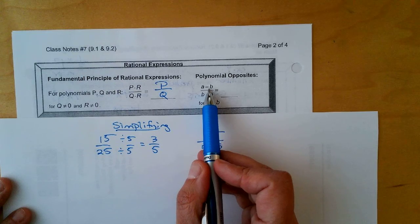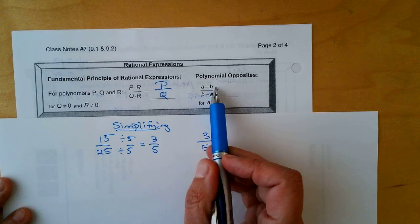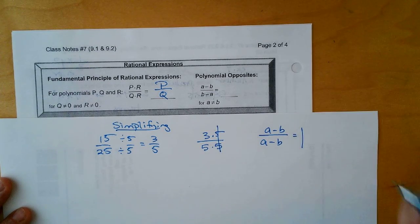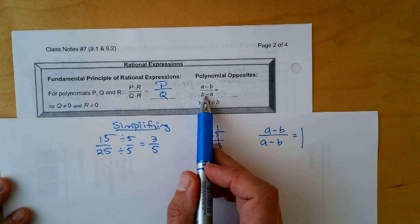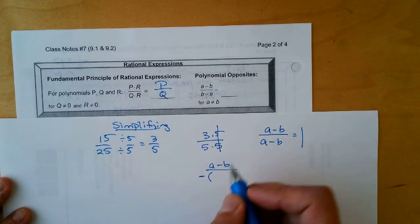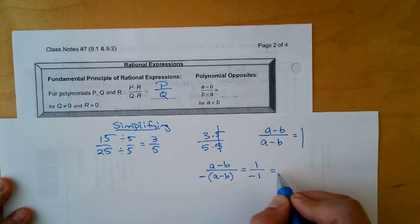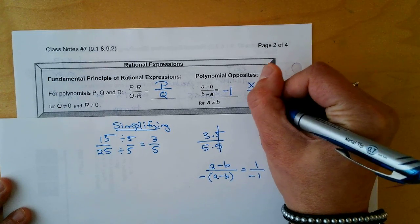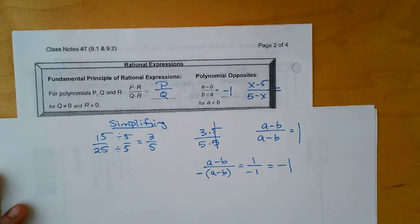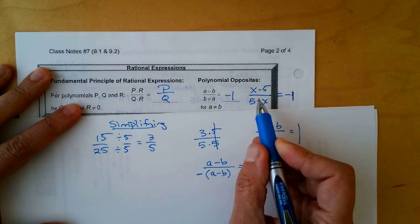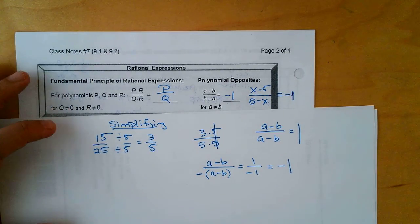What about A minus B divided by B minus A? If we factor out a negative 1 from the denominator, it becomes negative 1 times (A minus B). So A minus B over A minus B is 1, divided by negative 1, giving negative 1. For example, x minus 5 over 5 minus x equals negative 1, because the only difference between those two binomials is the signs.